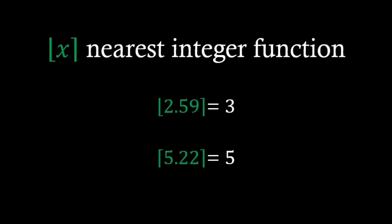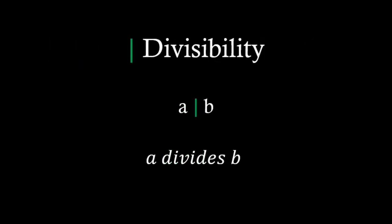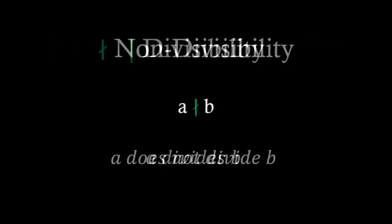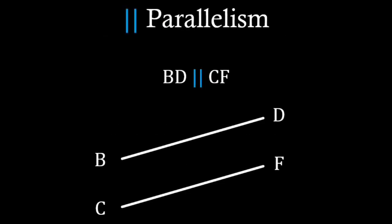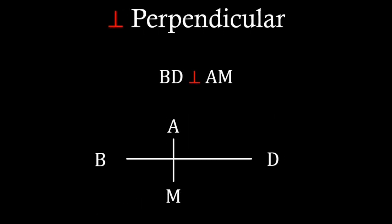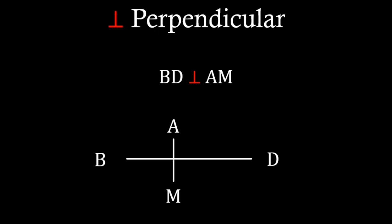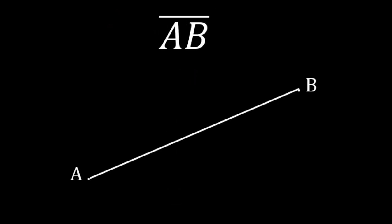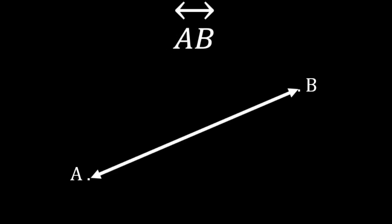Single line represents divisibility. This line, crossed, represents non-divisibility. Two lines denote parallelism, and those lines crossed represent non-parallelism. Upside-down t represents perpendicularity. Sometimes it can also mean that two numbers are co-prime. Bar over two points represents a line segment between those points. Arrow over two points represent a ray starting at the first point and ending at the second. Arrow pointing in both directions represents an infinite line passing through both points.